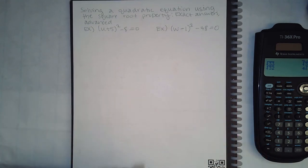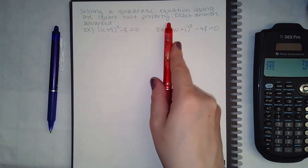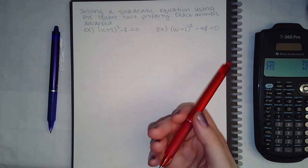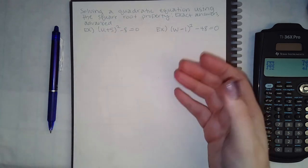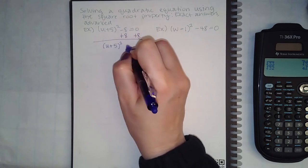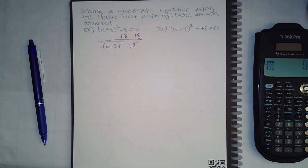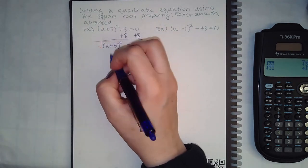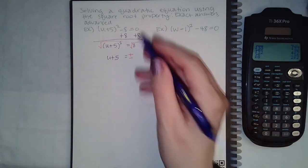Now, solving a quadratic using the square root property. Just like when solving square root equations we had to isolate the square root first, here if you have a square and want to apply a root, you need to get the squared part by itself first. The first step is to get the 8 to the other side so the squared term is isolated. Then take the square root of both sides — because I introduced the square root I get plus or minus. The exponent and root cancel, giving u plus 5, and the square root of 8 simplifies to 2 square root of 2.